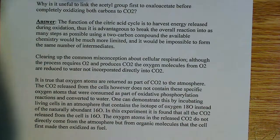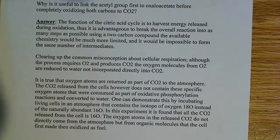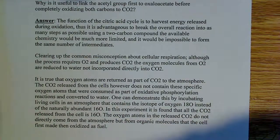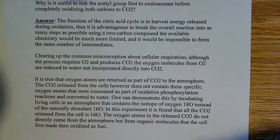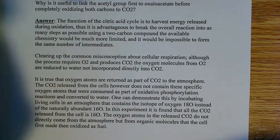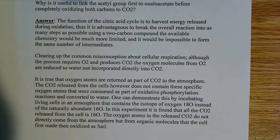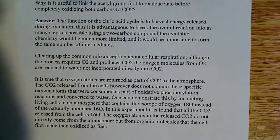Using the two-carbon compound, the available chemistry would be limited — the available chemistry for a two-carbon compound is pretty limited, you can't do too much with that. Whereas with a six-carbon compound like citrate, you can do a lot more. So that's another reason why. And you wouldn't be able to form as many intermediates, so that's important as well.